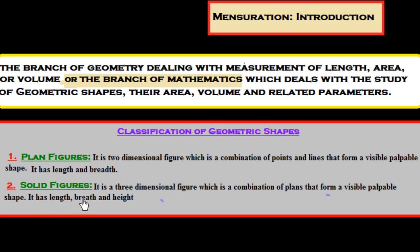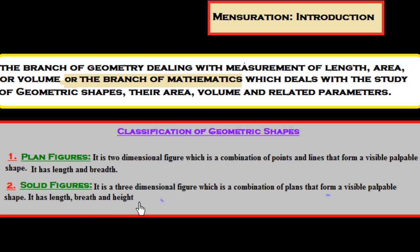The solid figure is a three-dimensional figure which is a combination of planes that form a visible, palpable shape — touchable and visible. It has length, breadth, and height. The one extra thing included here, compared to the plane figure, is height.